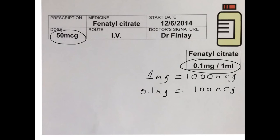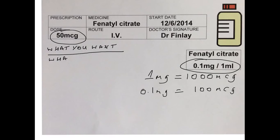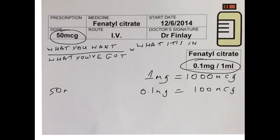Now we need to do our calculation. Use the formula: what you want over what you've got, times what it's in. What you want is 50 micrograms, over what you've got — 0.1 milligrams or 100 micrograms — per one milliliter. So we use the micrograms, and it's per one milliliter.